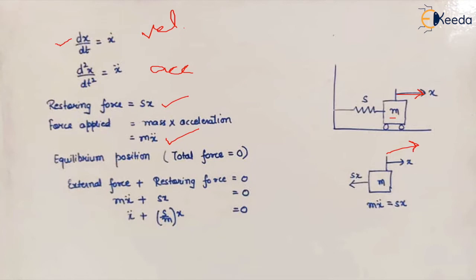Here comes Newton's third law of motion: for every action there is an equal and opposite reaction. This applied force is equal to the restoring force, and in the whole system the sum of these two forces is equal to zero. So the external force equation is: m into acceleration plus the restoring force equals zero.